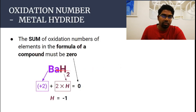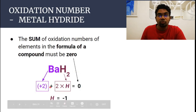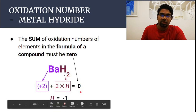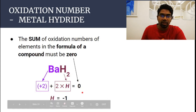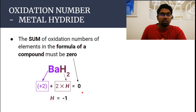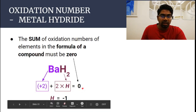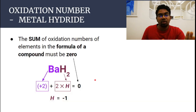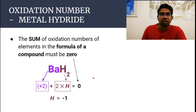For barium hydride, the oxidation number of barium is plus two because the charge of barium is 2+. So: plus two plus two times the oxidation number of hydrogen equals zero. Working this out, the oxidation number of hydrogen in barium hydride is minus one. In all metal hydrides, the oxidation number of hydrogen is minus one; in every other scenario it is plus one.